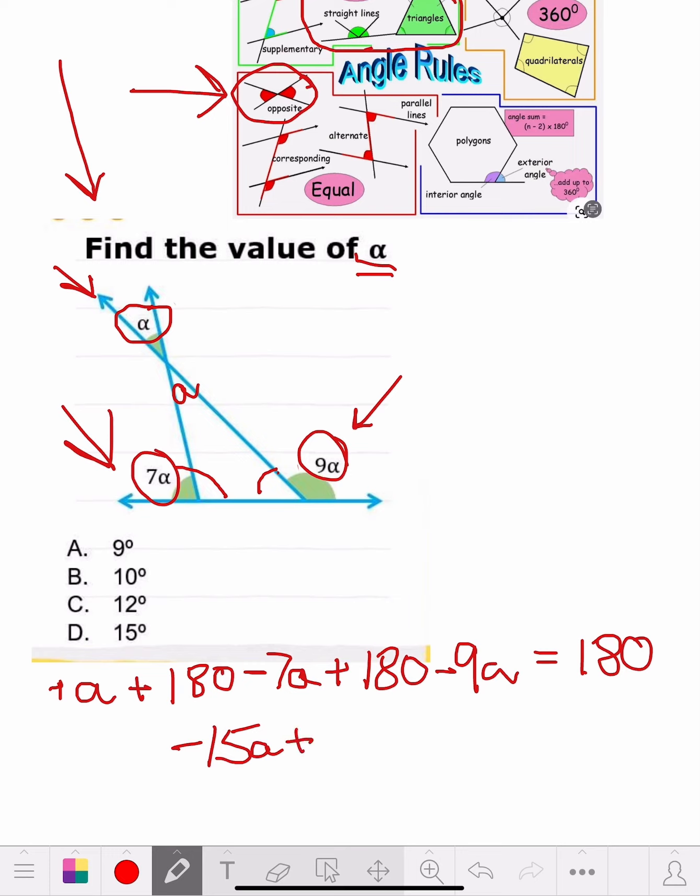Negative 360. That combines them all. We got the A, we got the 180, we got the negative 7A, we got the 180, and we got the negative 9A. That's all. Equals 180.